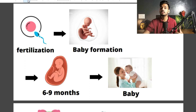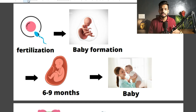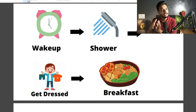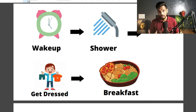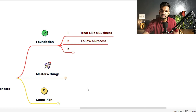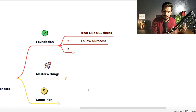Another example: when a new baby is born, first there is fertilization, an egg is generated, the baby forms, stays in the mother's womb for nine months, and then the result is a baby. Also, your daily routine — you wake up, take a shower, get dressed, have breakfast — that is also a process. Everything has a process. Similarly, in trading there is also a process, which I will share with you in the game plan at the end.